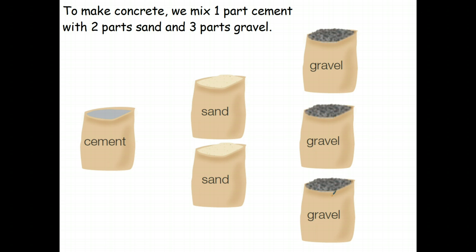If you were going to concrete a huge area, you might need 100 bags of cement and therefore 200 bags of sand and 300 bags of gravel. So when you're talking about ratios, you're just talking about the relationship between different quantities of the same type, in this case bags.